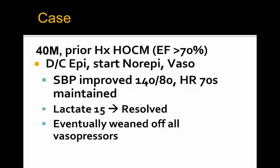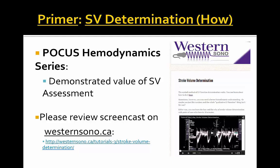In summary, this gentleman with known HOCM had epinephrine discontinued and was started on norepinephrine at 10 mcg/min and vasopressin at 2.4 units/hour. His systolic blood pressure improved dramatically to 140 over 80 with heart rate in the 80s. The lactate resolved with no further IV fluids — just the vasopressor switch. The patient improved enough to be weaned off all vasopressors and discharged to the ward — a very good outcome. Thank you for joining us for another hemodynamics series case; please visit westernsano.ca for POCUS hemodynamics and stroke volume how-tos.